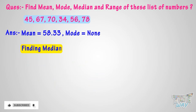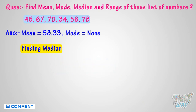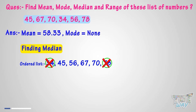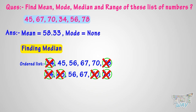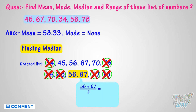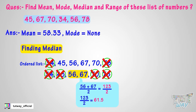Now let's find the median, which is the middle value in a list of ordered numbers. First, arrange the numbers in order. Then cut one value from each side — left and right — at the same time, repeating this until we are left with one or two numbers in the center. We are left with two middle values: 56 and 67. To find the median, we find the mean of these two numbers: 56 plus 67 equals 123, and dividing by 2, we get 61.5. So the median is 61.5.